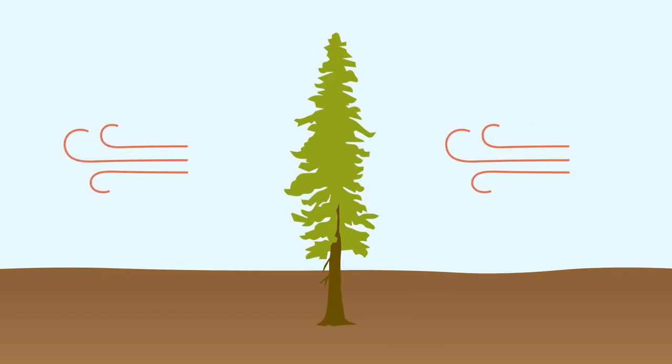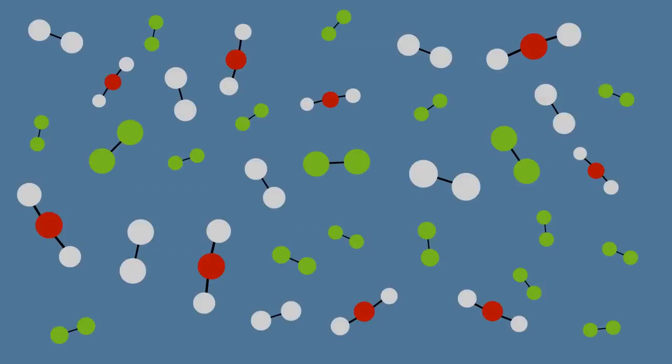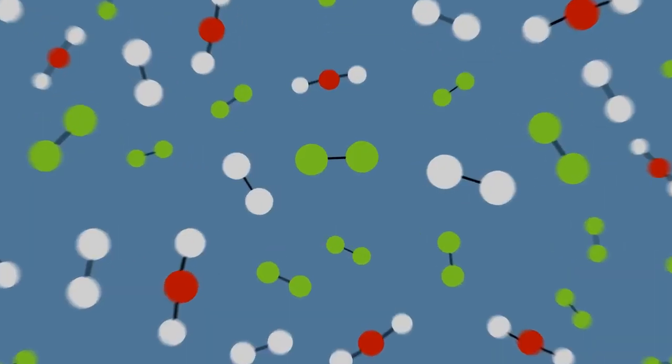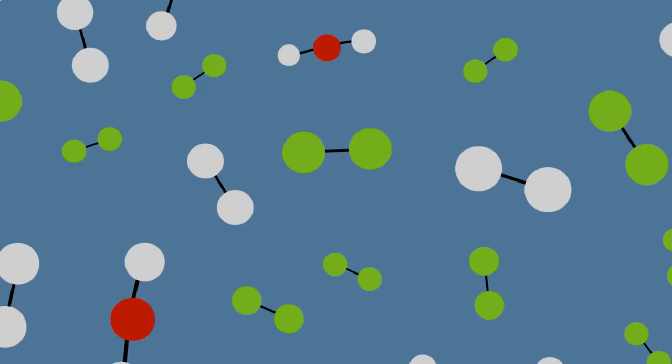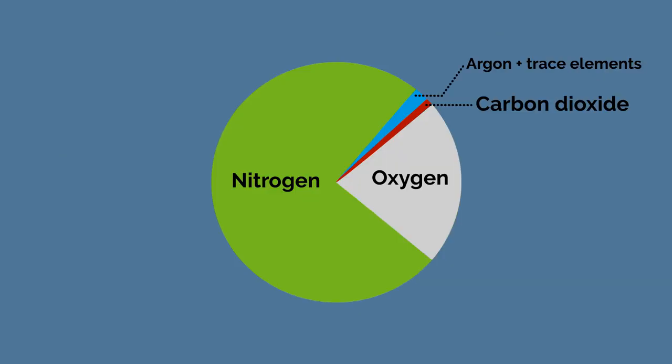The air around you seems empty, but it's not. Air is made of tiny bits called molecules. When you look closer at the molecules in our air, you'll find that it's mostly nitrogen, oxygen, and carbon dioxide.